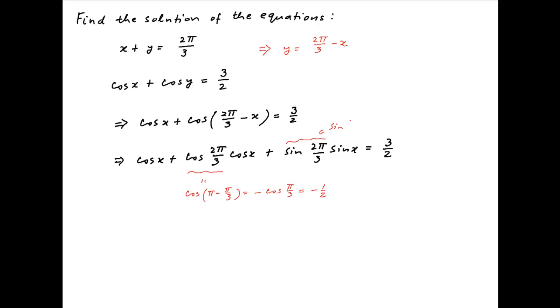Similarly, sin(2π/3) is equal to sin(π minus π/3), which is equal to sin(π/3), that is equal to √3/2.